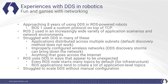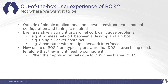ROS uses DDS in ways that can appear unexpected. Every ROS node starts many topics by default for internal infrastructure reasons, and ROS applications also tend to create a lot of application-level topics. We found that the DDS design tends to struggle with very large numbers of topics per node. As a result, we've struggled to scale DDS without manual configuration, which is quite difficult because we want to have a nice out-of-the-box user experience. Outside of simple applications and network environments, manual configuration and tuning is required. Even a relatively straightforward network — such as a wireless network between a desktop and a robot, using a Docker container, or a computer with multiple network interfaces — can cause problems.